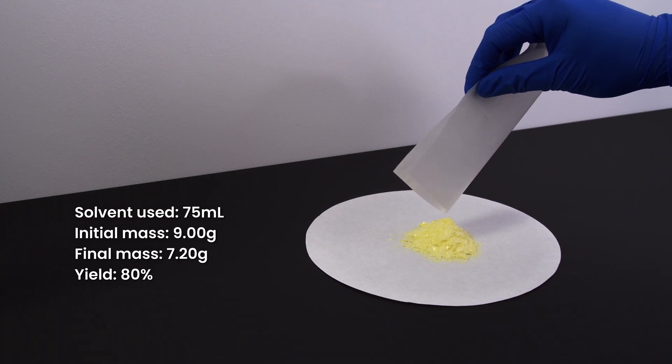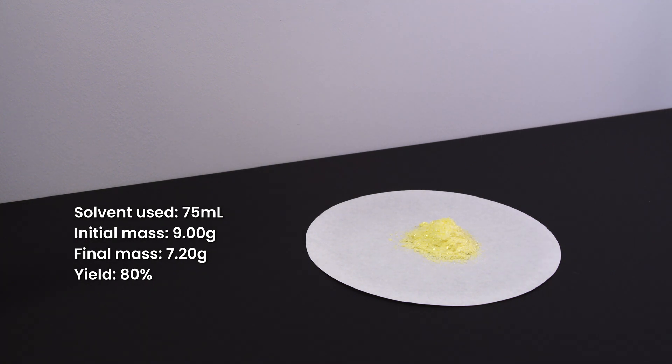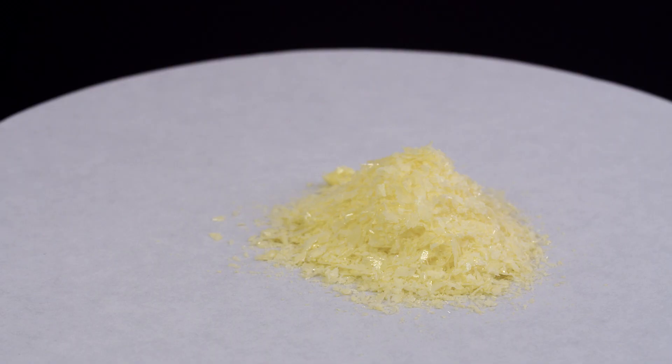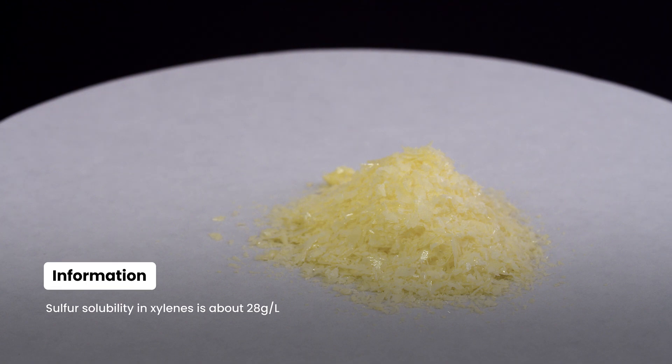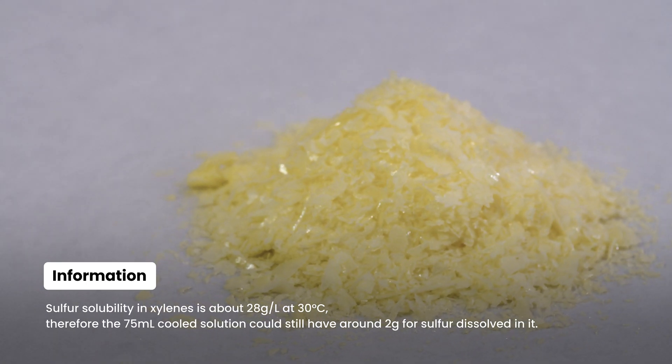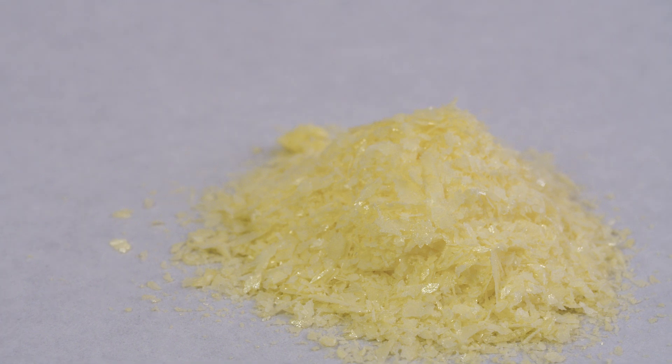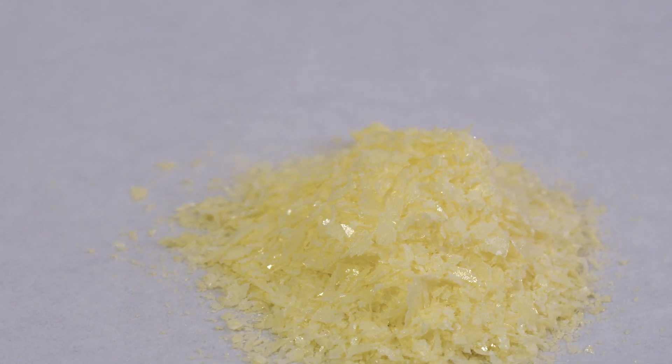The final mass of sulfur collected is 7.2 grams, which corresponds to 80% yield. Considering sulfur is still somewhat soluble in room temperature xylene, and there is considerable loss of product during transfer, 80% yield is not bad.